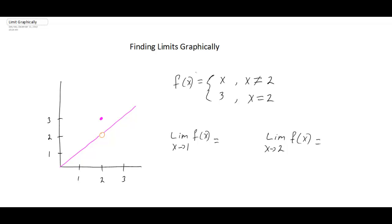This section's topic is finding limits graphically. We have a piecewise function, which simply means it's made up of two different functions. f of x is equal to x whenever x does not equal 2, and f of x is equal to 3 whenever x does equal 2. So what that means is if you're going to evaluate this function,